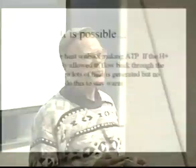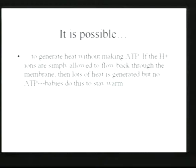Babies are born with specialized tissue called brown fat. Brown fat has lots of mitochondria that are hampered — they are unable to generate ATP. Instead, what they do is take lipids, break them down, and use that energy to pump hydrogen ions across the membrane just like regular mitochondria do. But in this case they don't make ATP — those hydrogen ions just flow back through the membrane and generate heat. That's how babies stay warm using brown fat. It's also why babies are usually born somewhat pudgy, because they've got all that brown fat they'll be getting rid of over the next several months.